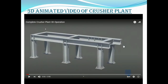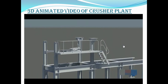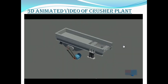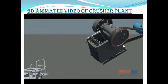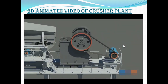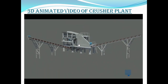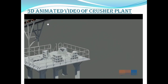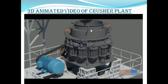Now let's look at the animated 3D video of a crushing plant. See how it is assembled here. This is the primary stage — this is a vibrating feeder, and below that is the primary crusher, called the jaw crusher. Then this is the hopper and these are the conveyors. The primary stage delivers material to the secondary cone crusher — this is called the cone crusher.